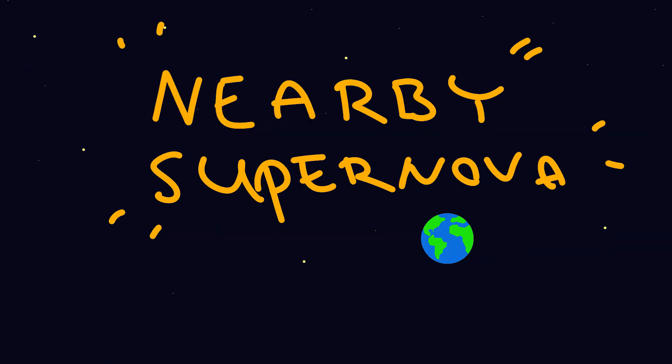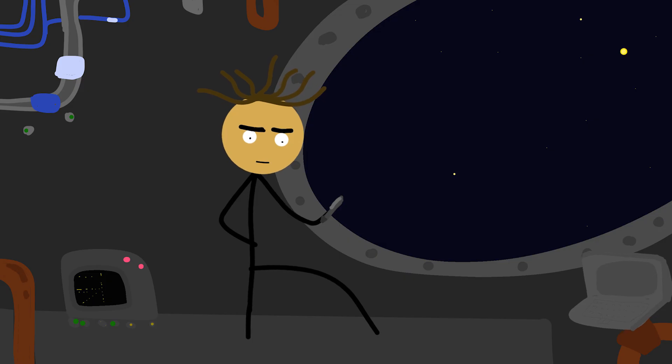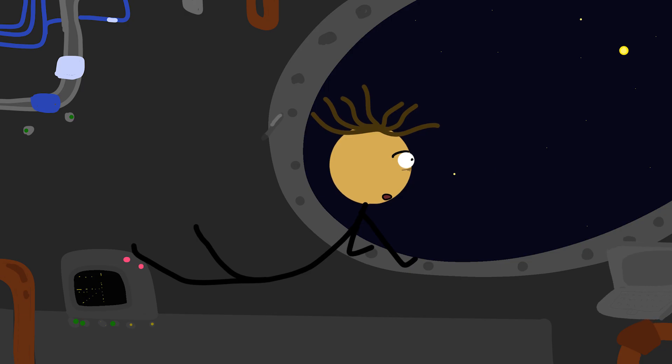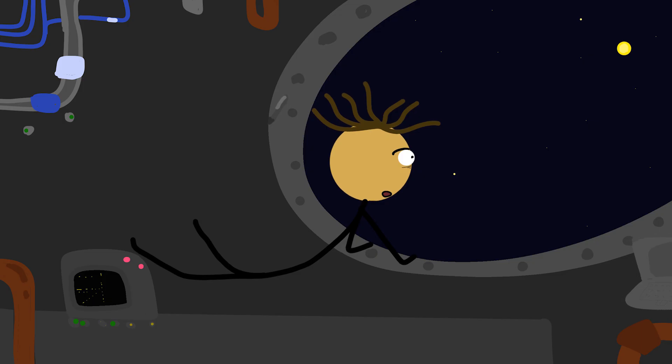Nearby supernova, far from Earth. Astronauts are the first to notice. A star that wasn't there yesterday, shining brighter than anything they have ever seen. At first, they think it's a flare or a reflection from the sun, but it doesn't fade. It grows.